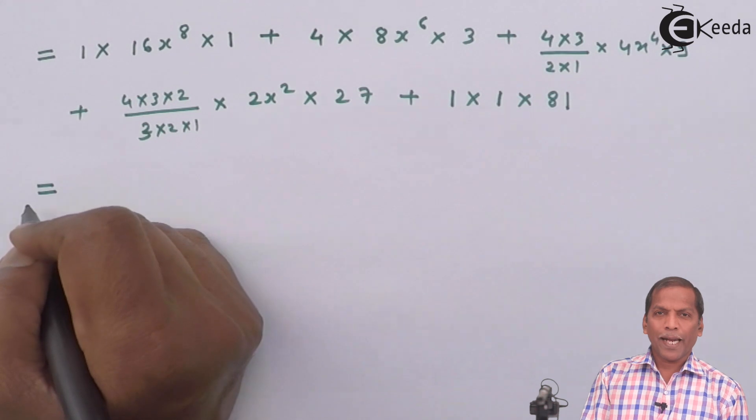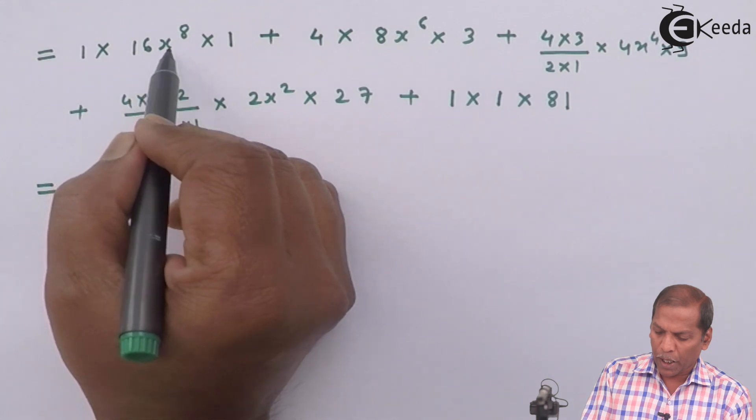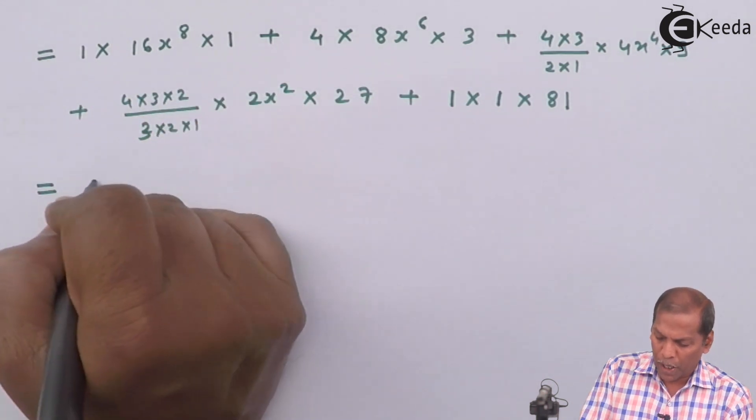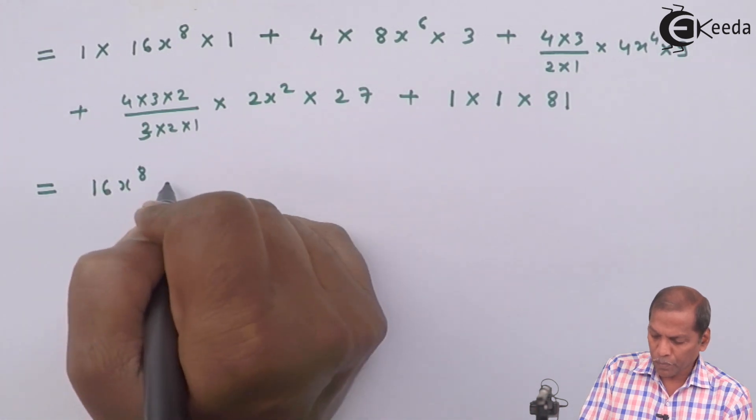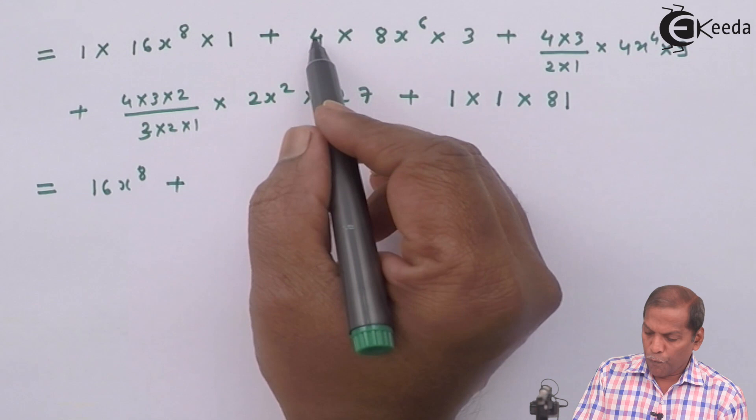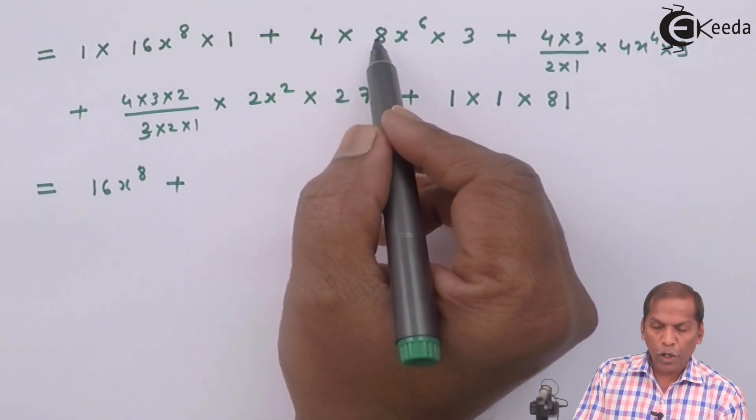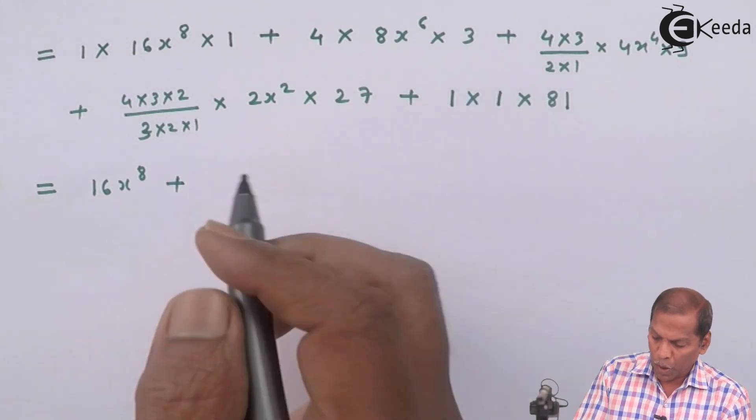So the next step will be 1 times 16x⁸ times 1, so final answer starts with 16x⁸ plus now 4 times 8 times 3, that is